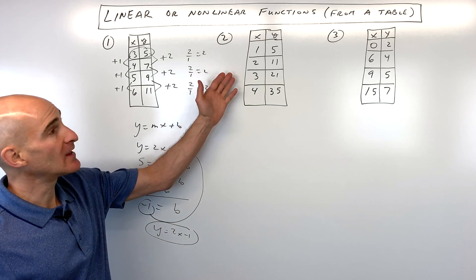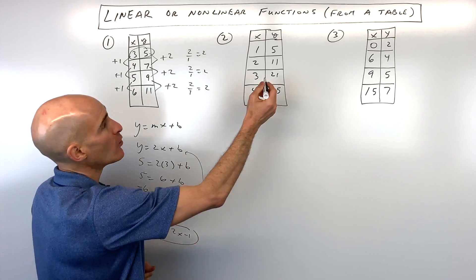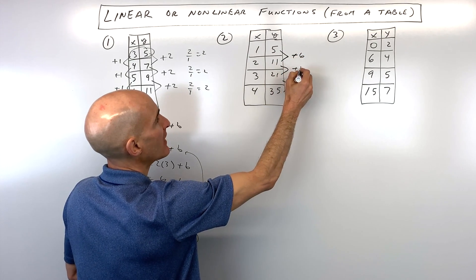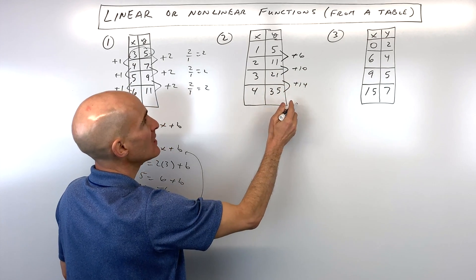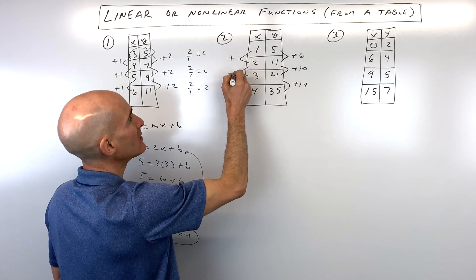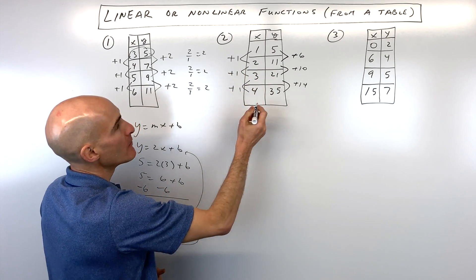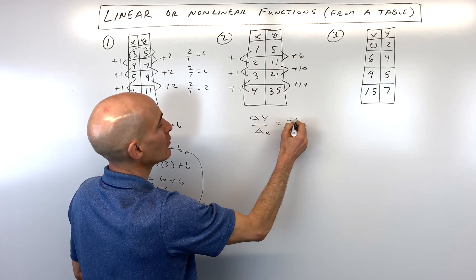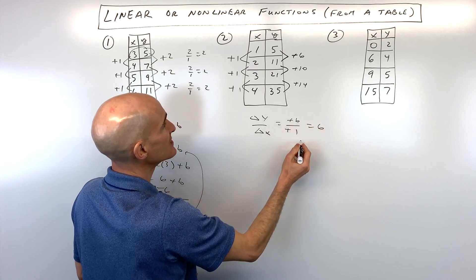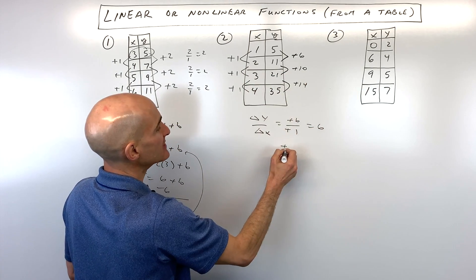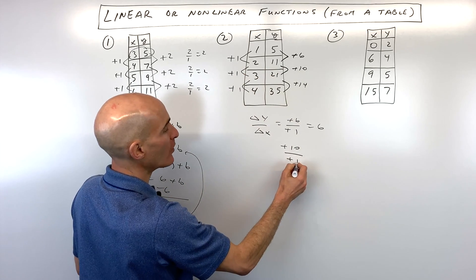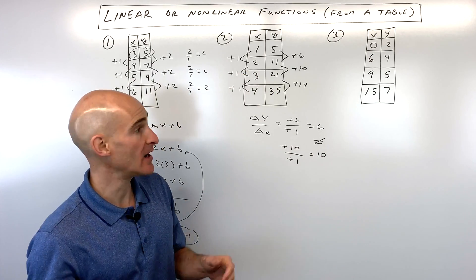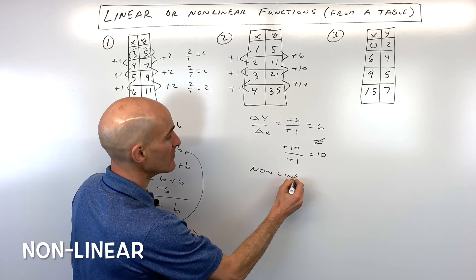Now let's look at number two — is this one linear or non-linear? Looking at how the y-values change: they go up by six, then by ten, then by fourteen. The x-values go up by one each time. So the slope is six here, then ten here — six does not equal ten, which means it's not going up at a steady constant rate. This one is non-linear, meaning not a straight line.